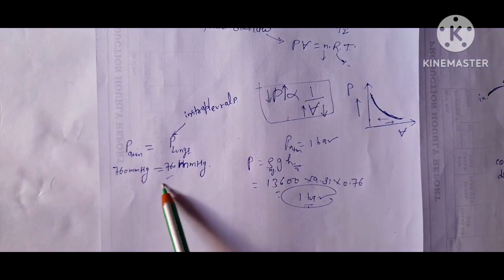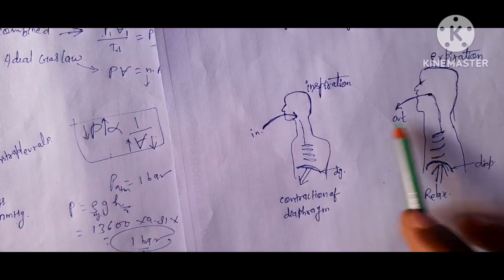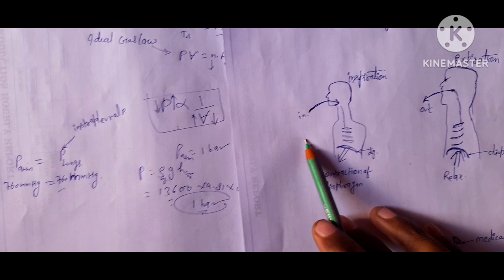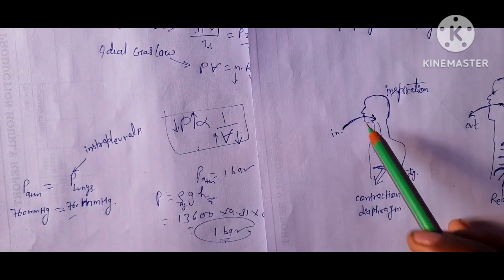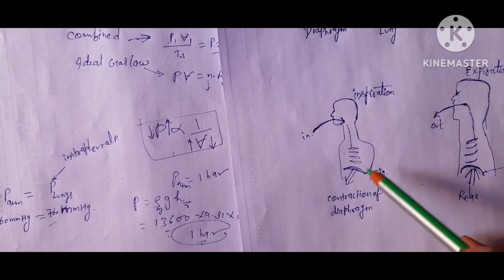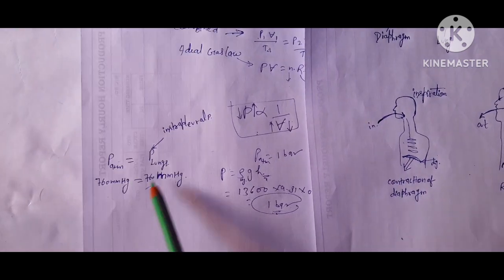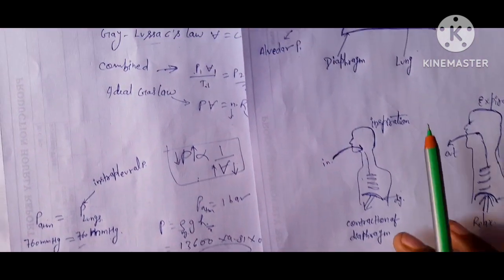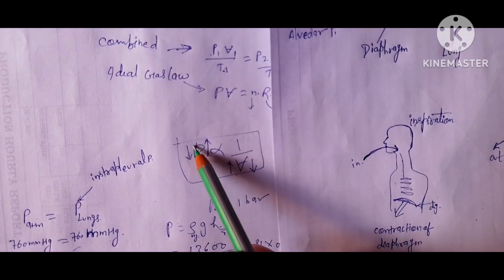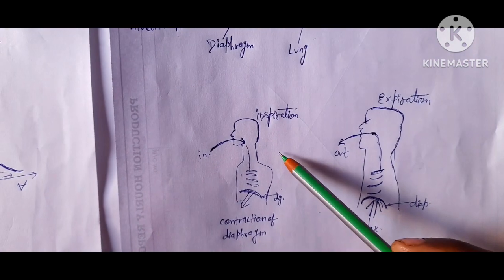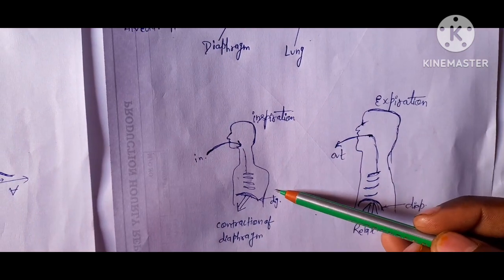Since pressure inside and outside the human body are both equal at 1 bar, how is respiration possible? It is possible by applying Boyle's Law: if pressure increases, volume decreases; if volume increases, pressure decreases. Without Boyle's Law, inspiration and expiration would not be possible.